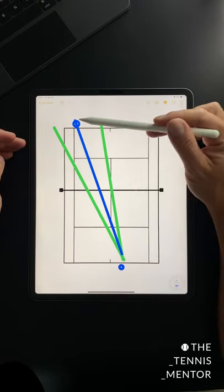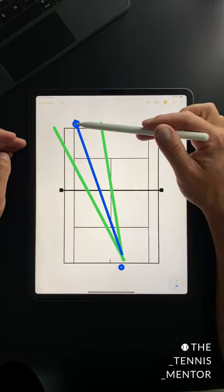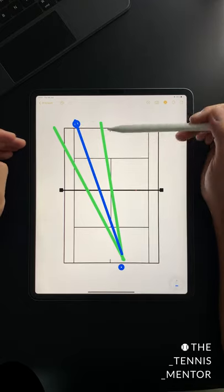If my opponent does stand wider, then I may need to consider shifting wider myself, and if my opponent stands really tight to the tee, I may decide to take one more step towards the tee myself.